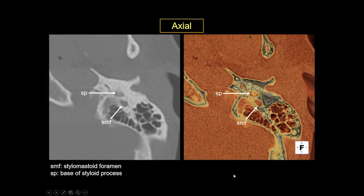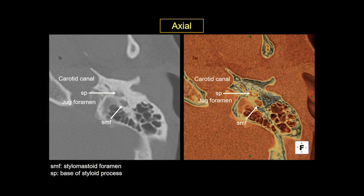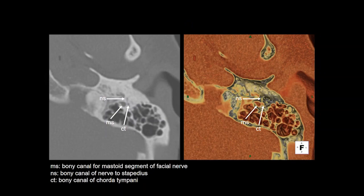Having understood the individual structures and their relationships, let us put everything together and start at the skull base at the level of the styloid process. Posterior and lateral to it lies the stylomastoid foramen — easily identified as it lies immediately posterior and lateral to the styloid process, and can be distinguished from the air-containing mastoid air cells. You also see the carotid canal and the jugular foramen. The jugular foramen has two parts: the pars nervosa, which is the smaller, and the pars vascularis, which contains the jugular vein and the 11th cranial nerve. Going further cranially, you see the mastoid segment of the facial nerve; laterally is the chorda tympani branch and anteriorly is the nerve to the stapedius, which you will see 100% of the time.